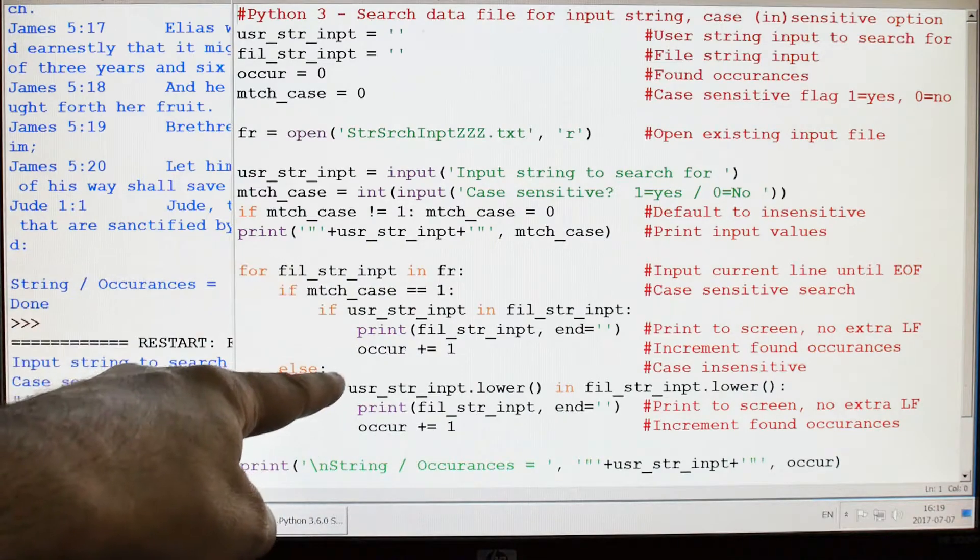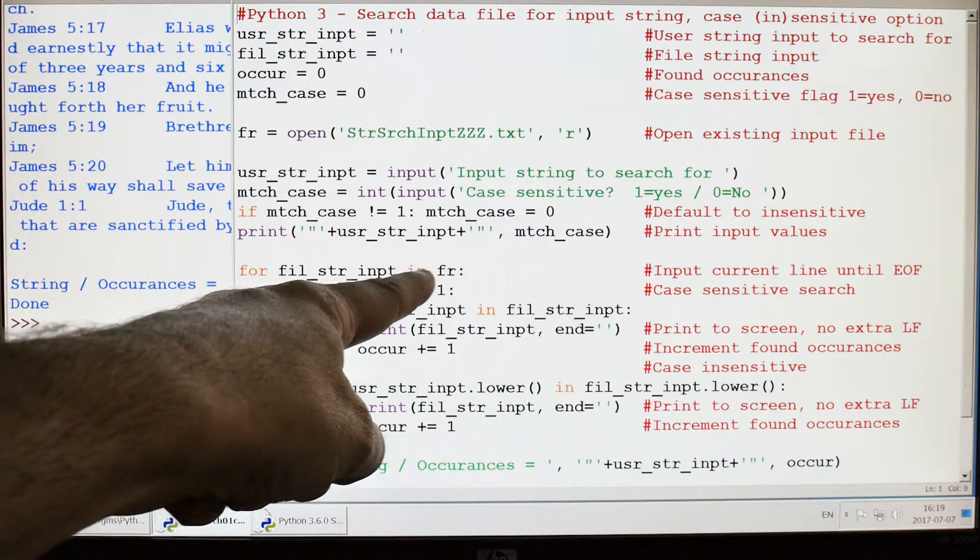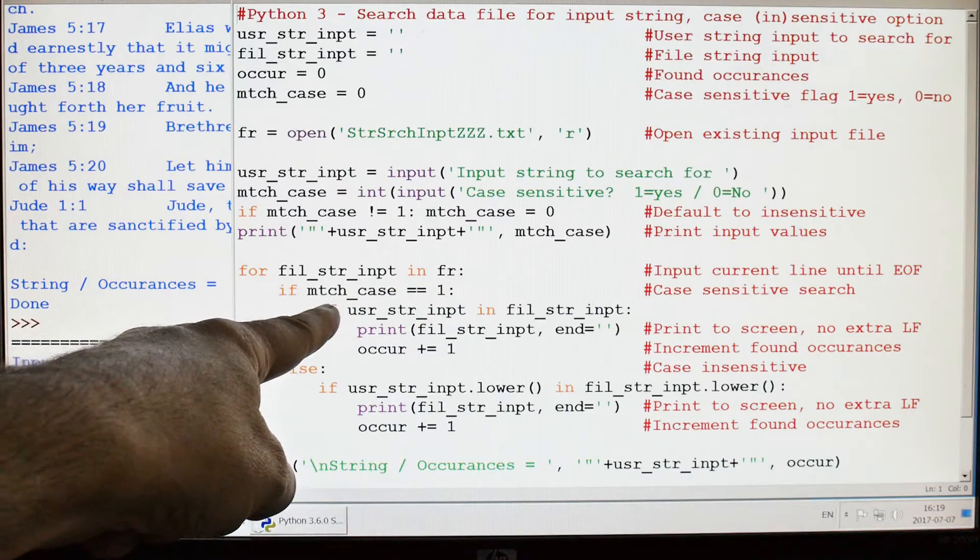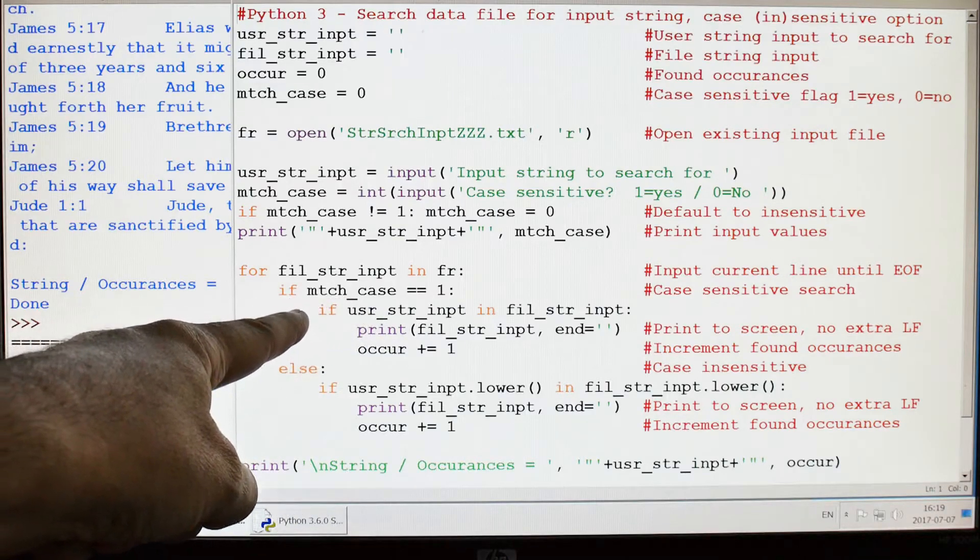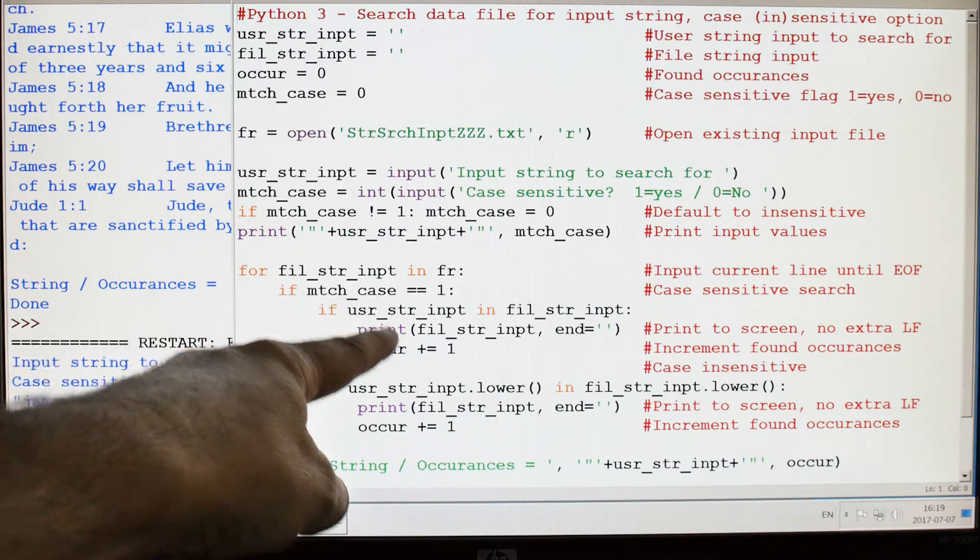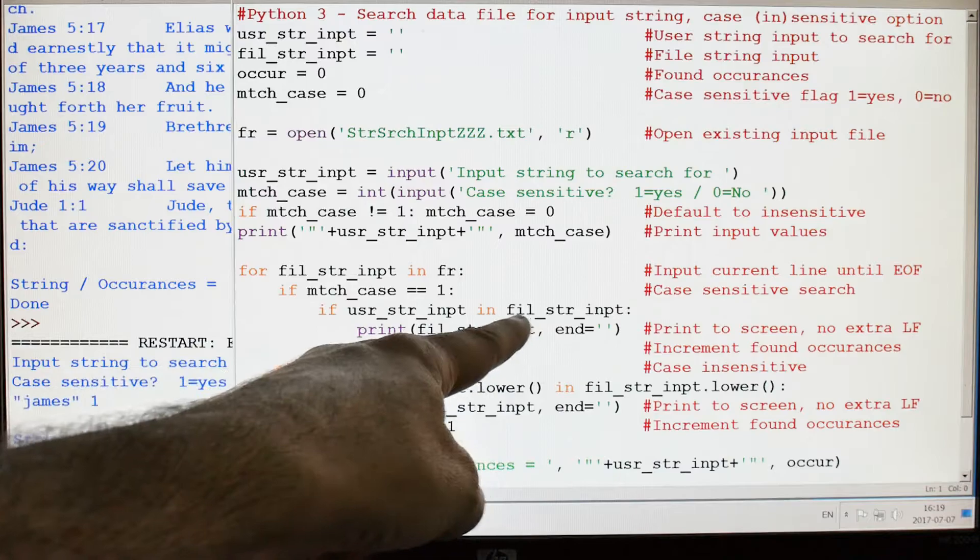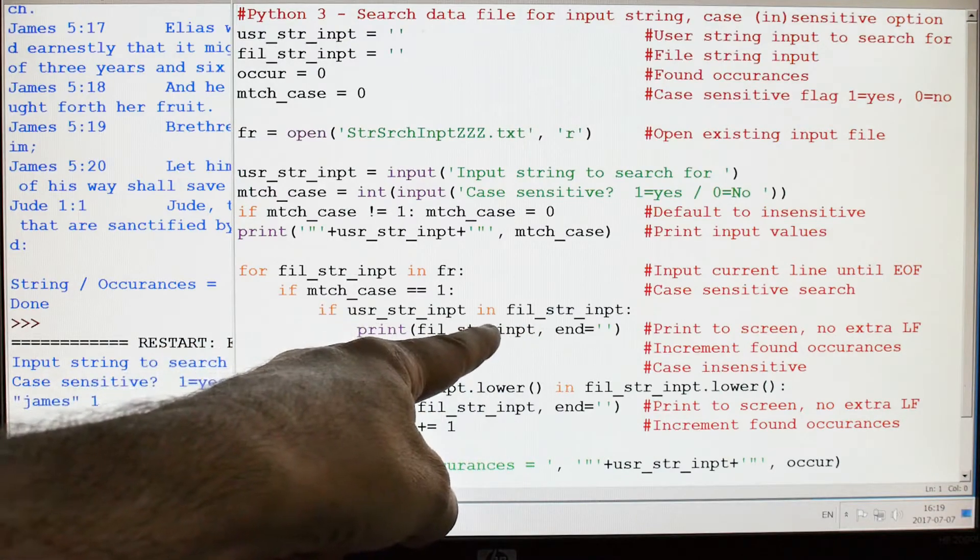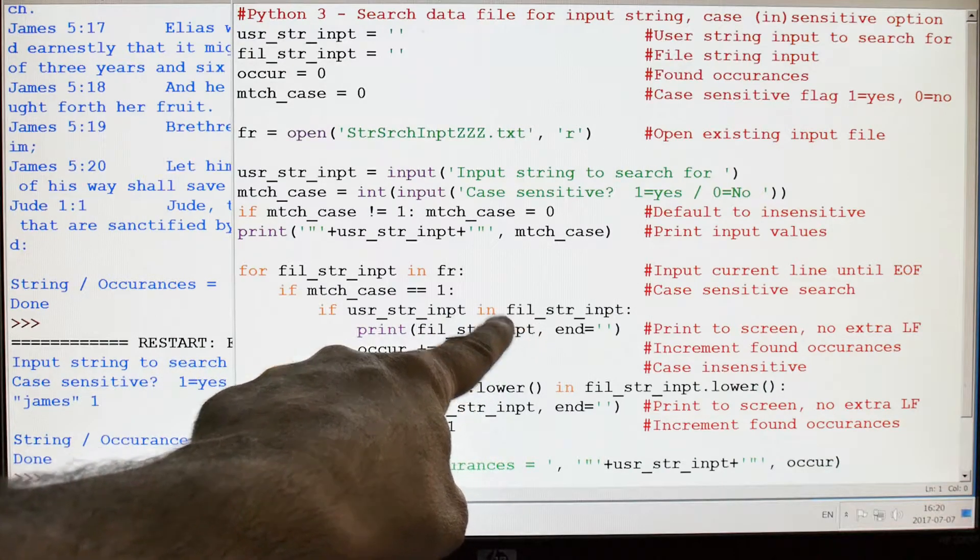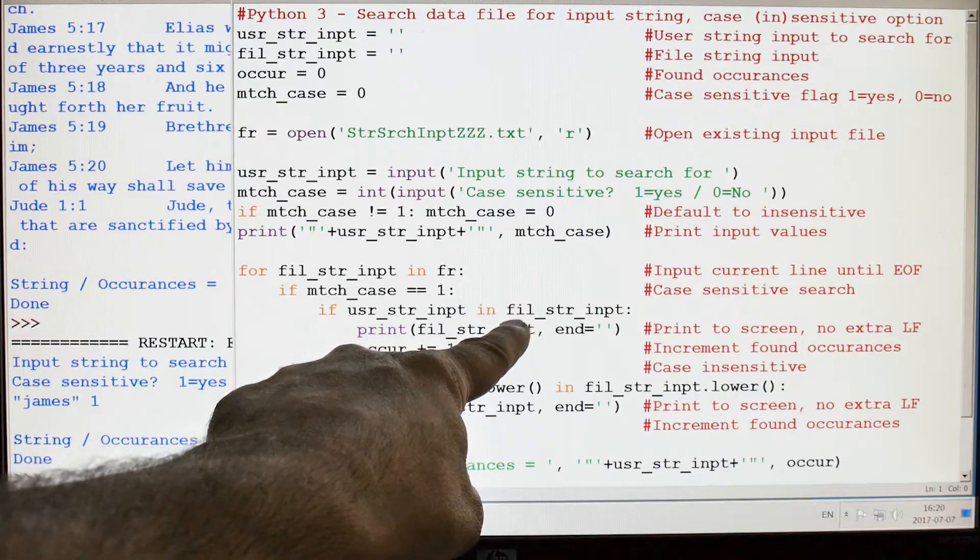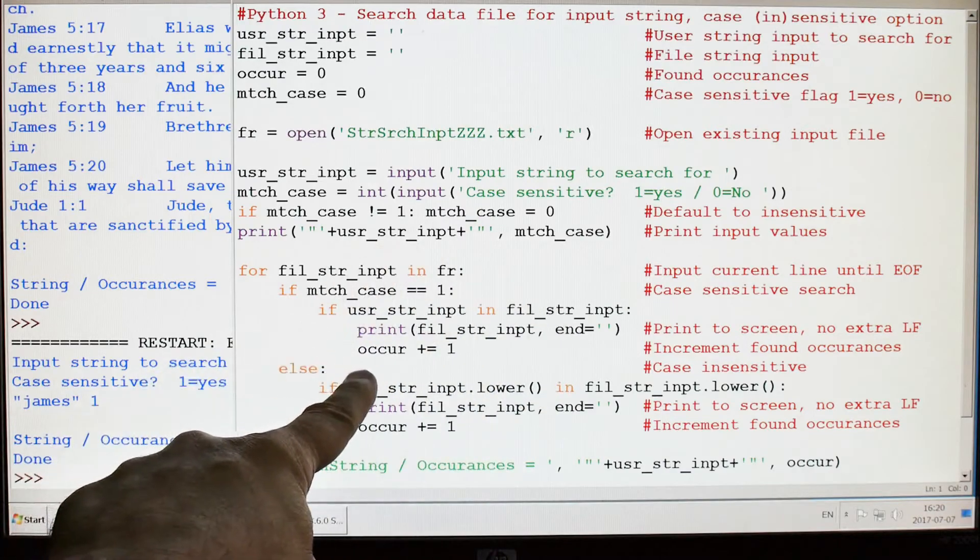Here's the main part of the program right here. We're just going to go through the file: for file string input in file, if the match case is equal to one—in other words, this is a case sensitive search—if the user selected case sensitive, then it's going to go through this until the end of the file. If the input string is inside the file string, it's going to print it out without a line feed and then bump the occurrence by one.